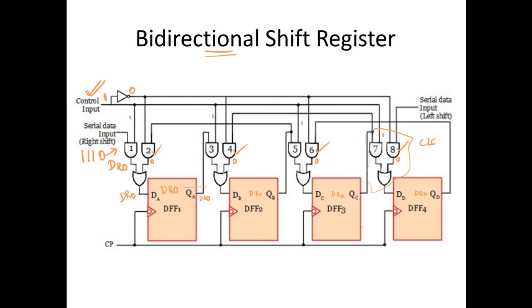This is similar to your SISO operation. We need 4 clock pulses to feed data bits 1, 1, 1, 0 inside the register. During the next 4 clock pulses the entire data 1110 can be collected at QA, one bit per clock pulse. This completes the shift right operation.